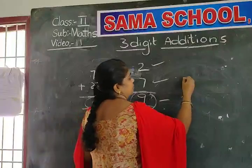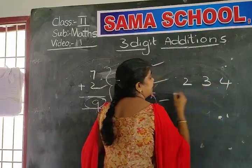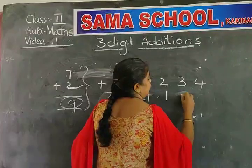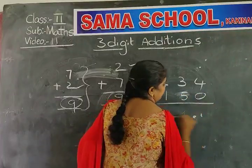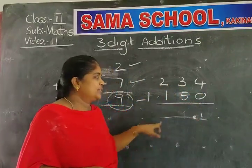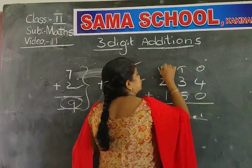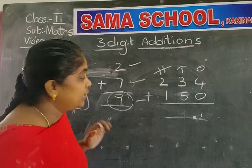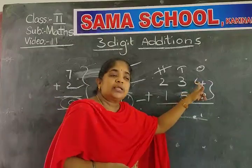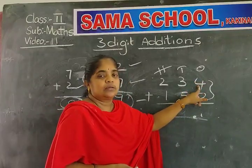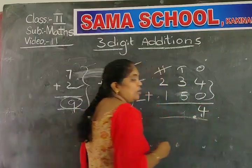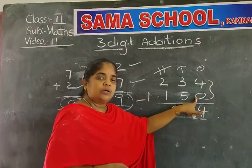Let's see a problem: I am adding 234 and 150. What is the sum? In the ones place, four plus zero — if you add zero to any number, you get the same number — four plus zero equals four.